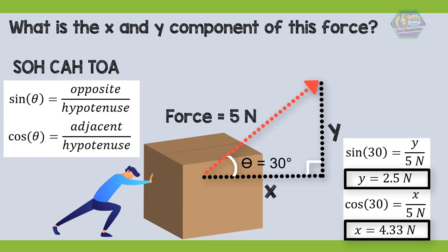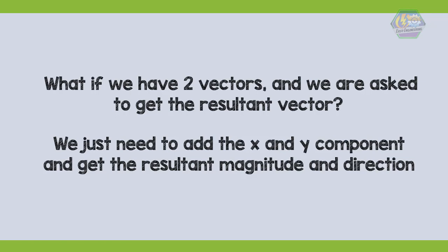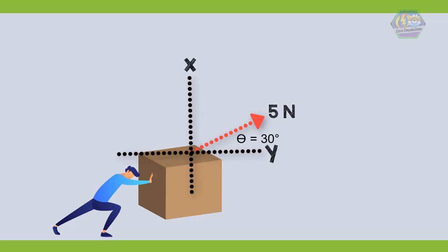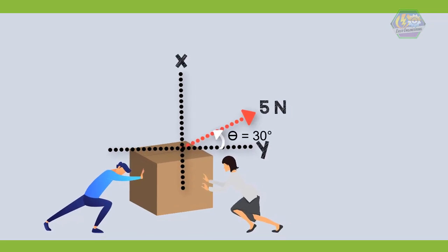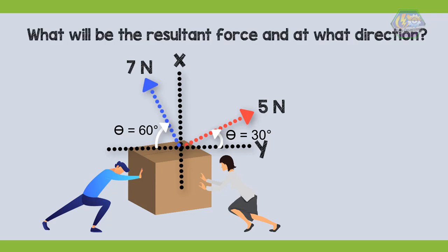Both components are positive because they lie on the positive X and Y axis. Next, what if we have two vectors and we are asked to get the resultant vector? We just need to add the X and Y components and get the resultant magnitude and direction. For example, suppose you applied a 5 Newton force at 30 degrees counterclockwise from the positive X axis, and your sister applied a 7 Newton force at 60 degrees clockwise from the negative X axis. What will be the resultant force and at what direction?